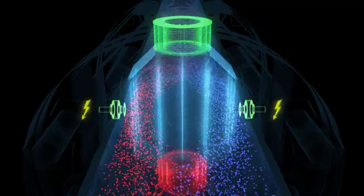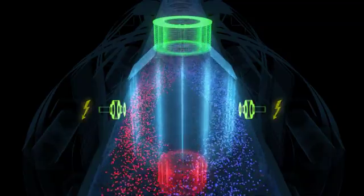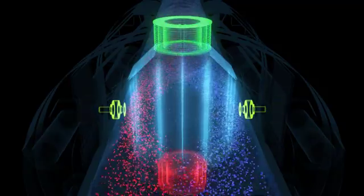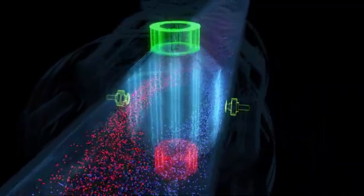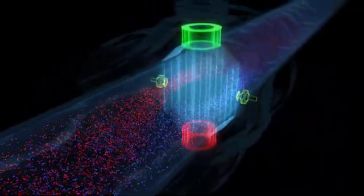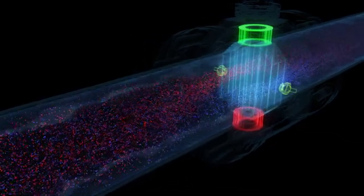Now an electrical voltage forms, which is detected and measured by the two electrodes. This voltage is directly proportional to the flow velocity in the pipeline. Together with the known tube cross section, the flow volume can then be calculated.